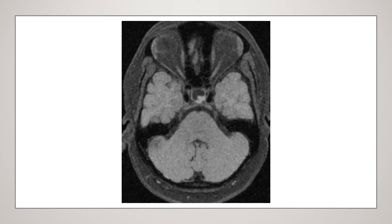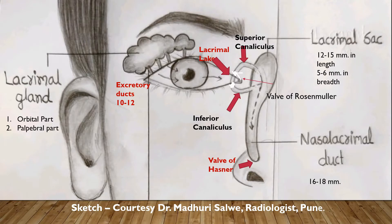Before we discuss the case further, let us discuss a little bit of anatomy of the nasolacrimal apparatus. As you can see from these fat-suppressed images of the orbit, we can see that these are the lacrimal glands which are situated on the supralateral aspect of both orbits. I would like to thank Dr. Madhuri Salve for providing this sketch.